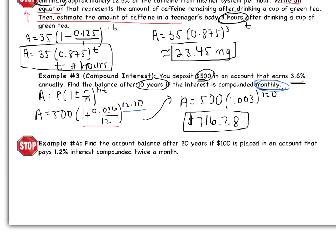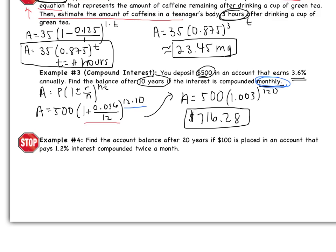Okay, let's look at example 4. It says find the account balance after 20 years if $100 is placed in an account that pays 1.2% interest compounded twice a month. As you can see, we have a stop sign here. That means to pause the video and try on your own, please.